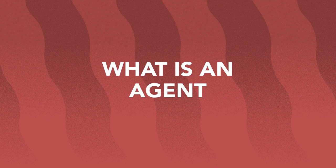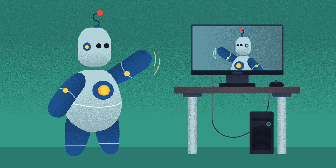An agent is a thing that performs a task autonomously. There are three aspects to defining an agent. First, it's a thing. It can be virtual, such as an application or a computer program, or a physical thing, like an intelligent robot or a machine.